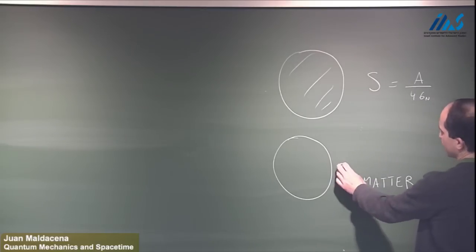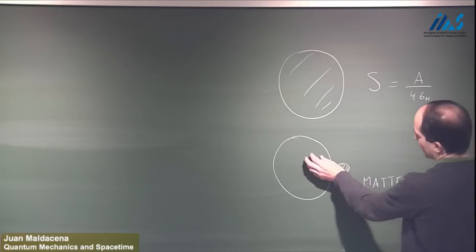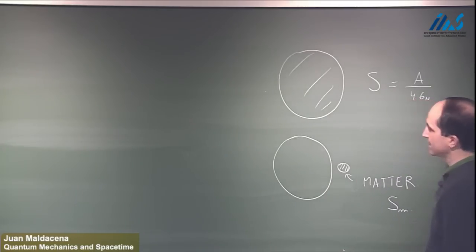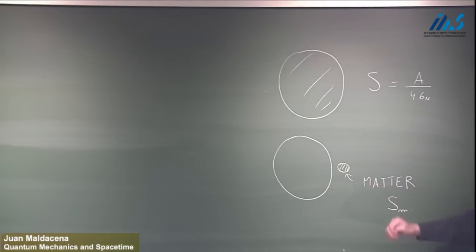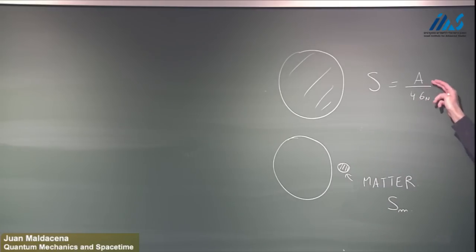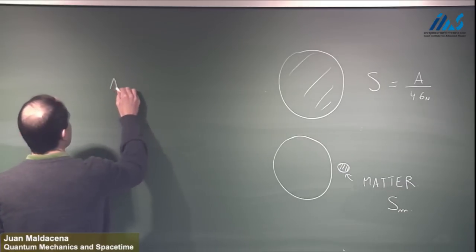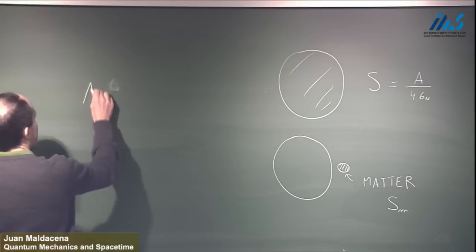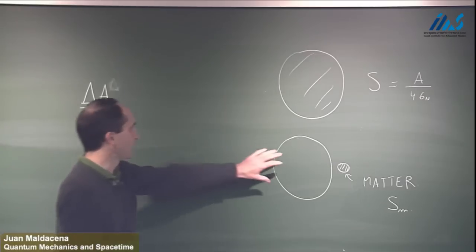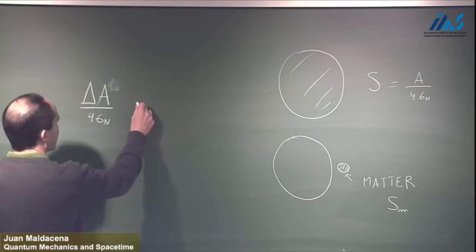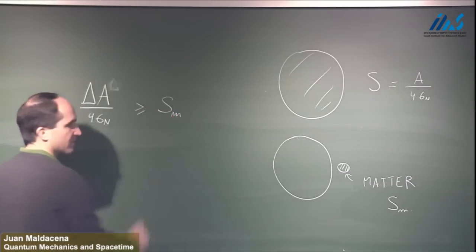That's not the end of the story, because this matter carries some energy, and when you throw it into the black hole, it will increase the black hole mass and therefore also increase the black hole area. The question is whether the area increases enough: the area increase should be such that when you put it in this formula, it's bigger than the entropy of the matter. In other words, we would like the change in area divided by 4G Newton — the change in the entropy of the black hole — to be bigger or equal than the entropy of the matter we threw in.